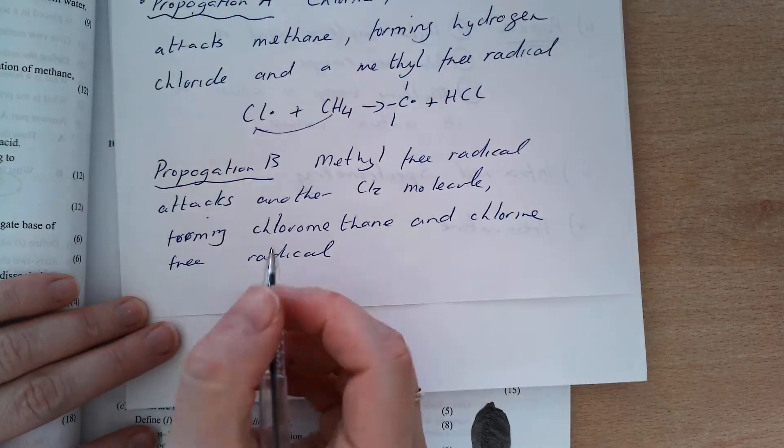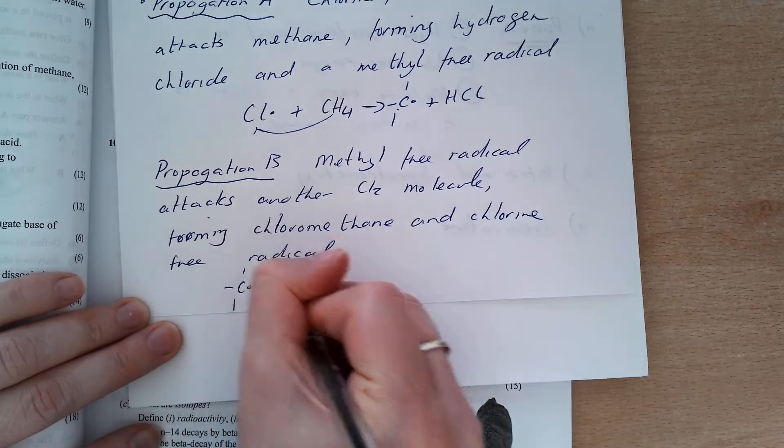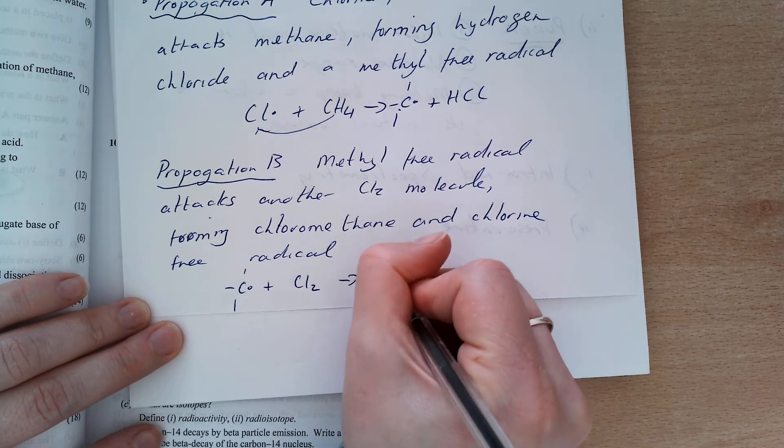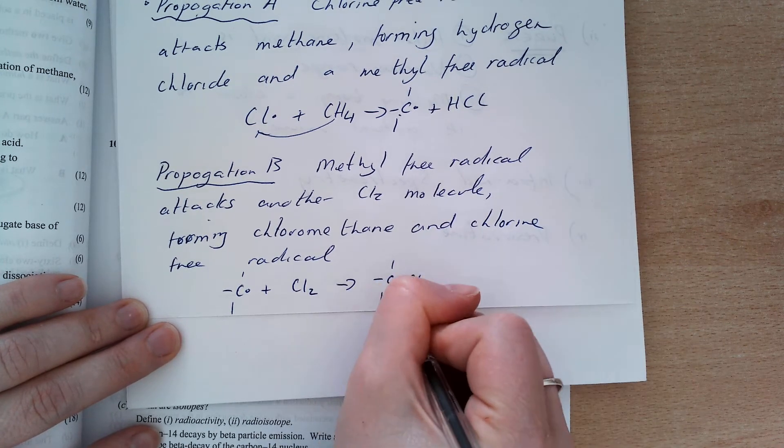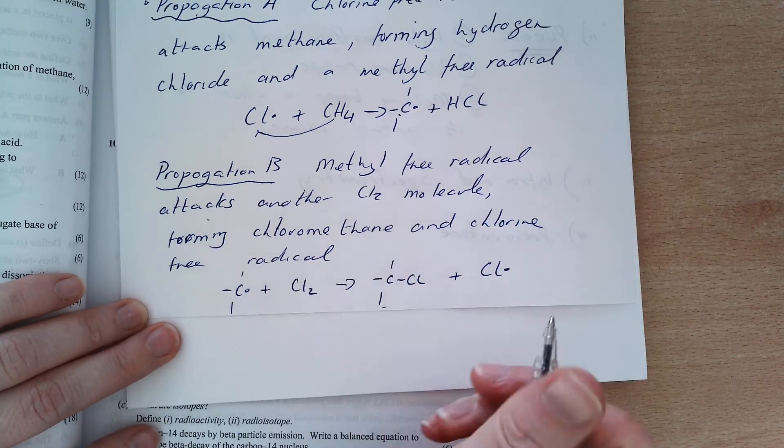So my methyl-free radical is what I have here, and that attacks another chlorine molecule, Cl2, to form chloro-methane, which is this, plus one chlorine-free radical left.